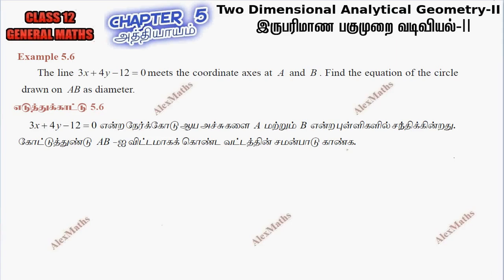Hi students, this is Alex here. Example 5.6: The line 3x plus 4y minus 12 equal to 0 meets the coordinate axis at a and b.